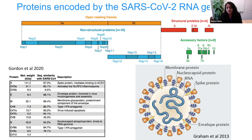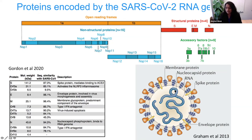The spike protein is the largest structural protein. The M protein, or membrane protein, is arranged on the lipid bilayer of the virus. E proteins, less abundant than M protein, are also present on the membrane. The nuclear protein binds the RNA and packages it into the virus particle. Although there are 12 different proteins in the structural ORF region, only four proteins are used for making the particle.